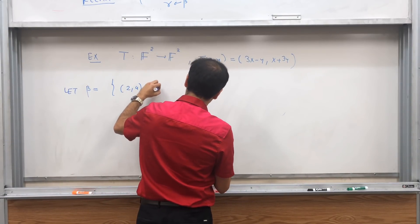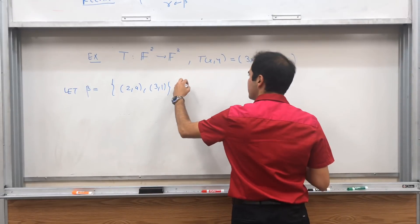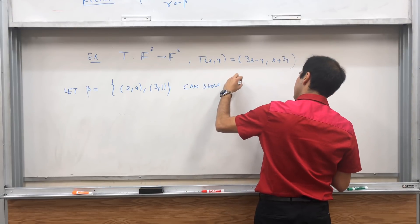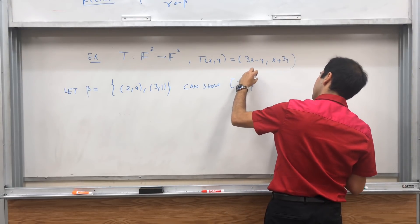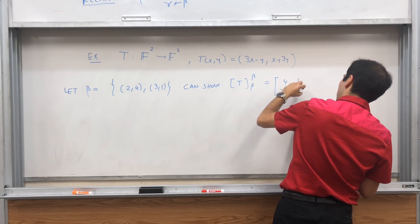Then let's start with one basis. Suppose you're given the matrix of T with respect to the following basis: (2,4) and (3,1). Then it turns out we can show that the matrix of T with respect to beta is simply 4, -2, 1, 2.